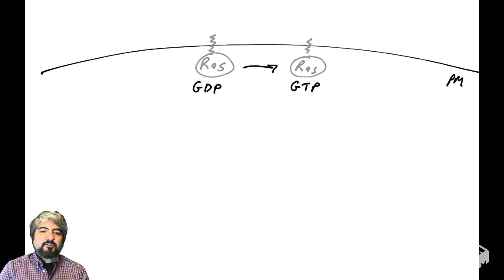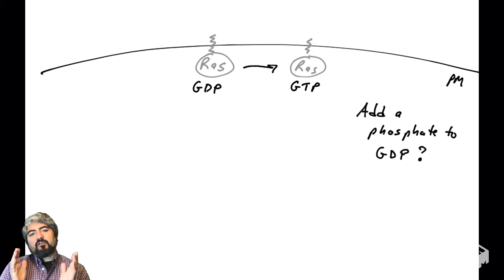Here is a drawing of RAS tethered to the plasma membrane by a lipid that is conjugated to it covalently. RAS can be bound with GDP and can get converted to RAS-GTP when a signal tells the cell it's time to go through the cell cycle. So the question is, how does RAS go from having GDP (diphosphate) to having GTP (triphosphate)?